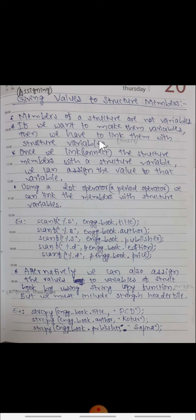After closing the body of a structure, we write the struct keyword and structure name, then list the structure variables separated by commas and end with a semicolon. This is how we declare the structure and structure variables. If we want to make structure members into variables, we have to link or connect them with the structure variables.